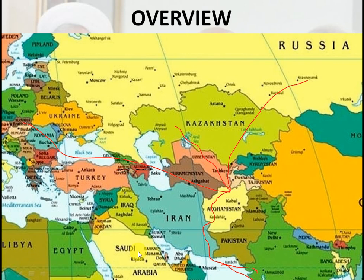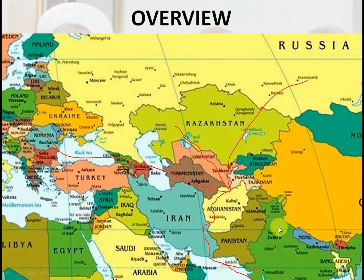Otherwise, if India wanted to connect with Russia, it had to take the Gulf of Aden route, going through the Red Sea, then the Mediterranean Sea, and from above reach Russia. This was because Pakistan was basically not giving us permission. Earlier there were talks that Pakistan would give us a route, but many investors had to invest anyway and it cost a lot.